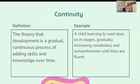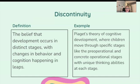Continuity is the theory that development is a gradual, continuous process of adding skills and knowledge over time. For example, a child learning to read does so in stages, gradually increasing vocabulary and comprehension until they are fluent. As a former kindergarten teacher, I can attest to this — it is a gradual process.